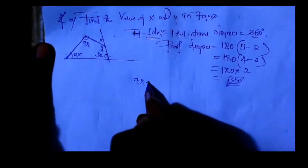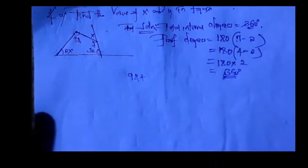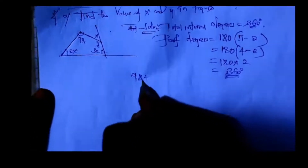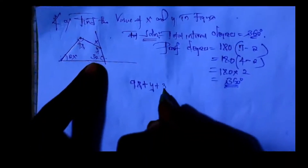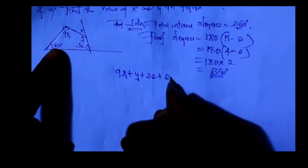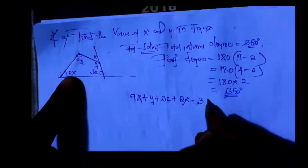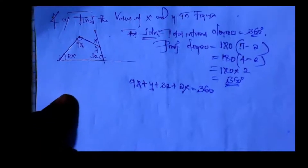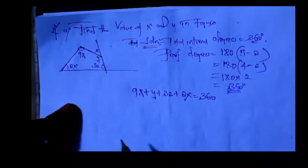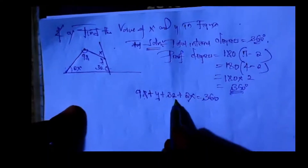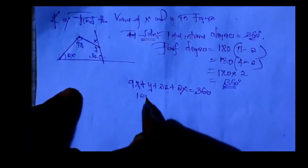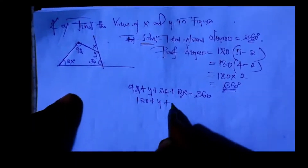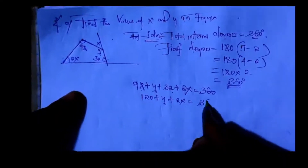So adding: 98 plus Y plus 32 plus 2X gives you 360. Therefore, simplifying: Y plus 2X equals 360.